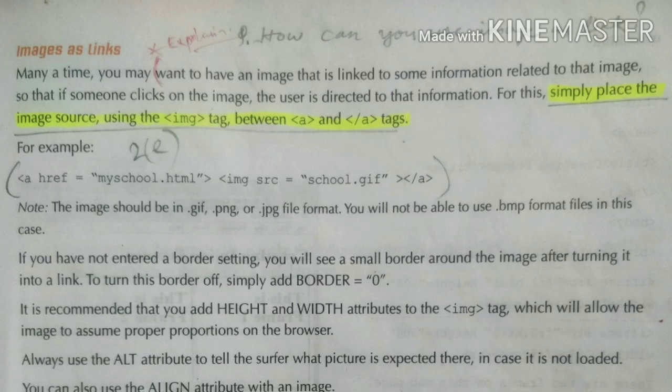Always use the ALT attribute to tell the surfer what picture is expected there, in case it is not loaded. Sometimes the image might not appear on the screen, so you have to use the ALT attribute. When you use the ALT attribute, you write what image the user should expect. If it is a school, you just write ALT equal to school. If the picture is not coming, this text will appear instead.